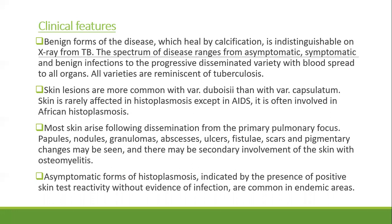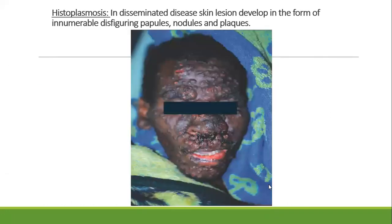Asymptomatic forms of histoplasmosis, indicated by the presence of positive skin test reactivity without evidence of active infection, are common in endemic areas. This picture shows disseminated disease with skin lesions in the form of innumerable small papules, nodules, and coalescing plaques.